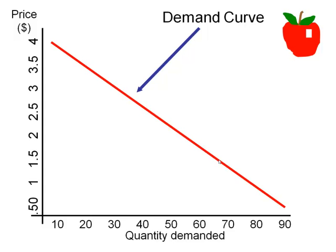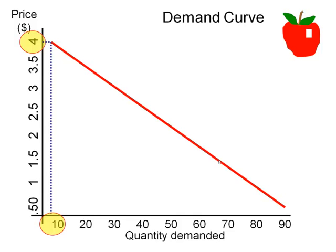The demand curve shows the relationship between price and the quantity demanded. So if price is at $4, how many apples are our grannies likely to purchase? The graph shows us that at a price of $4, somewhat less than 10 apples — so eight or nine apples is likely what grannies would be prepared to buy at that price.